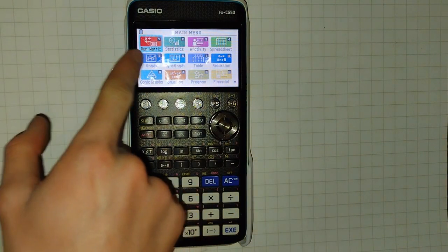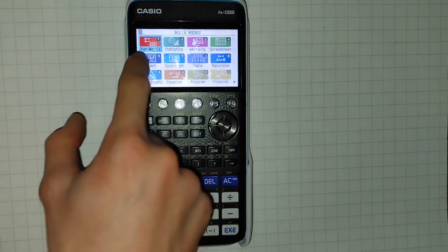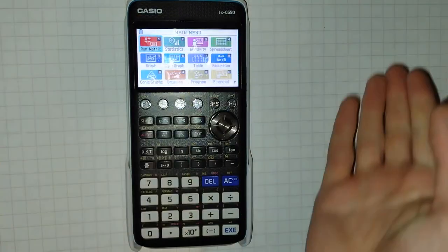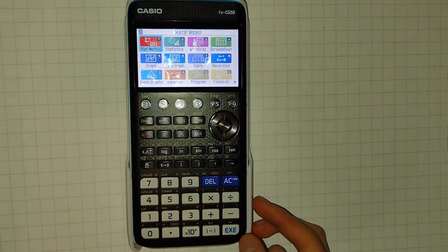Again, we're going to need to enter the run matrix mode, and the clue's in the name here. This is the run matrix mode because it can do calculations with matrices.